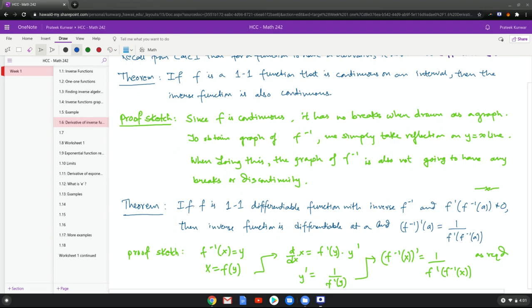Well, the next result tells us that if a function is 1-to-1 differentiable, then has an inverse f inverse such that f prime of f inverse of a is not 0, then the inverse function is differentiable at that point a, and f inverse prime at a is 1 over f prime of f inverse a.